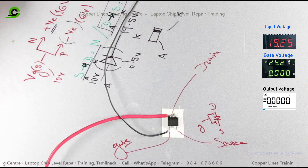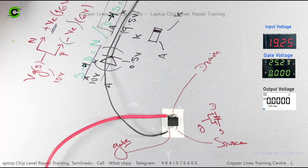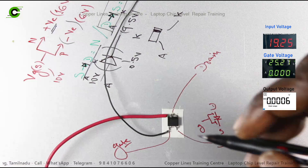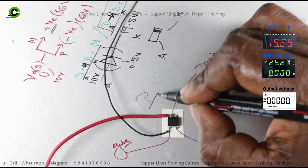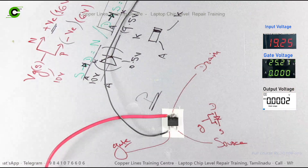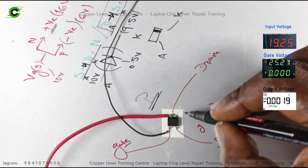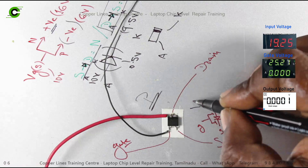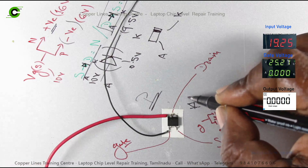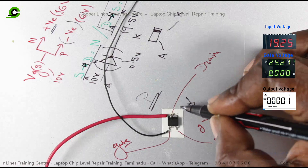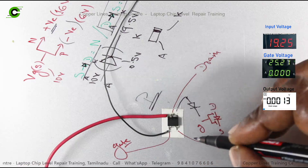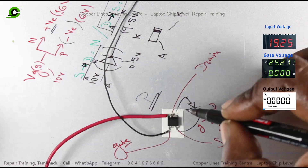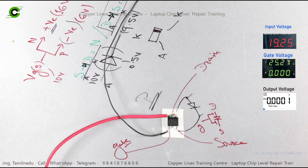If the MOSFET is forward biased, there is a P channel. The anode is connected with the drain and the cathode is connected with the source. This is the gate.